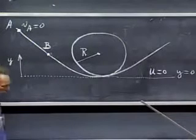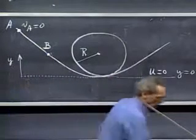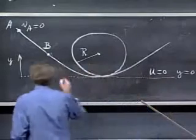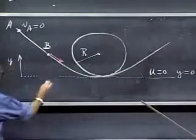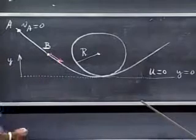At A, the object has no velocity, no speed. At B, of course, it does. It has converted some potential energy to kinetic energy.